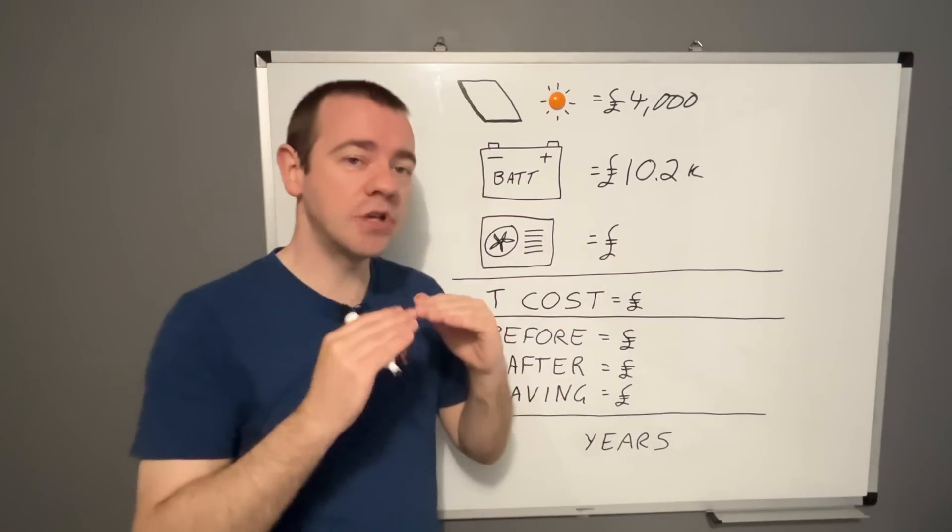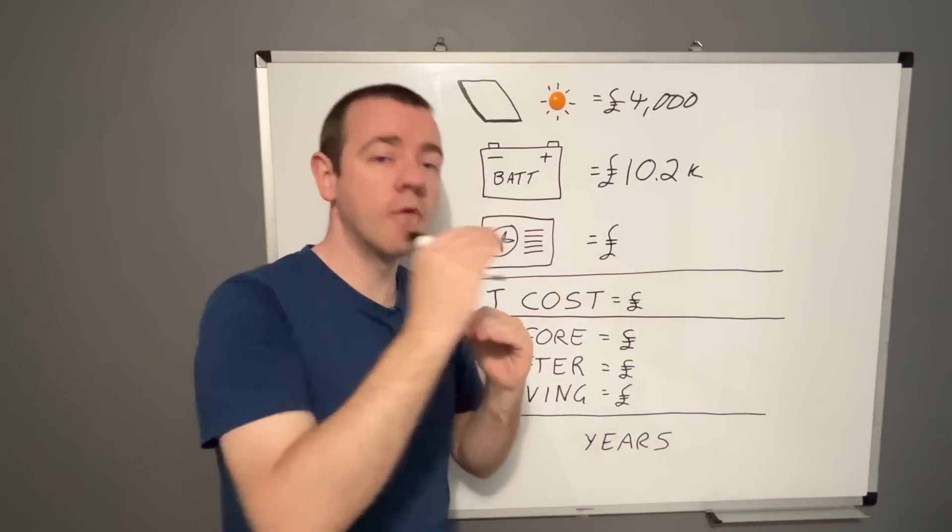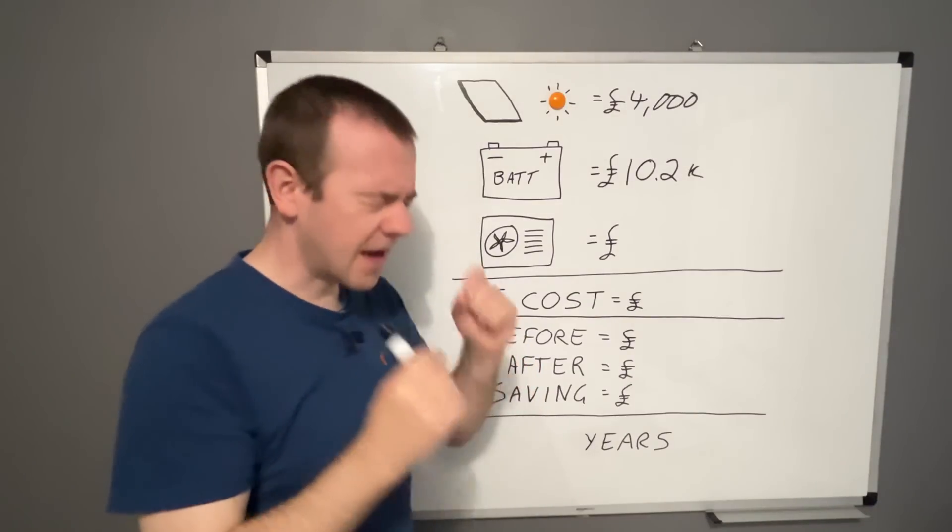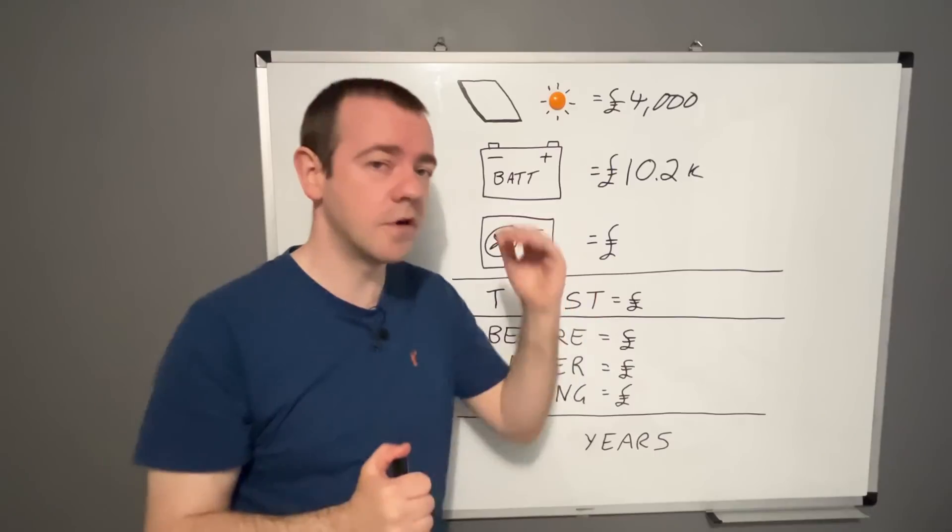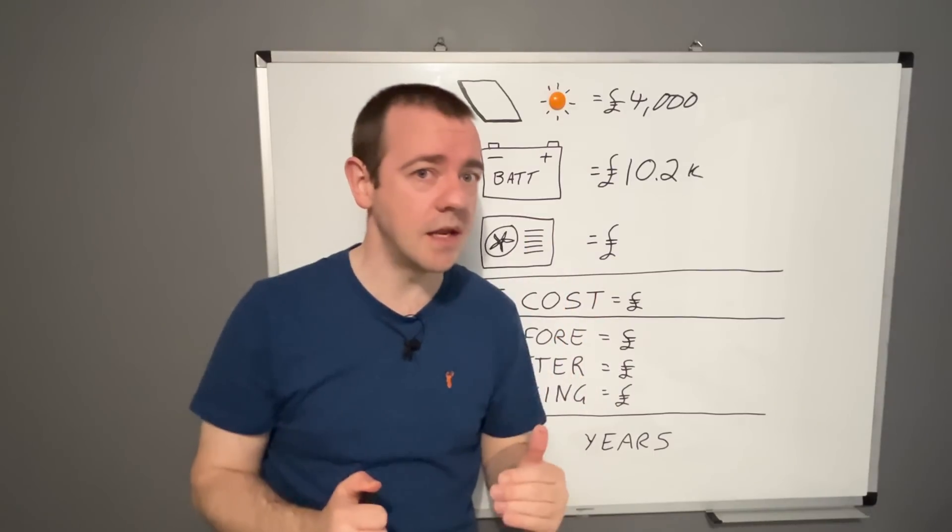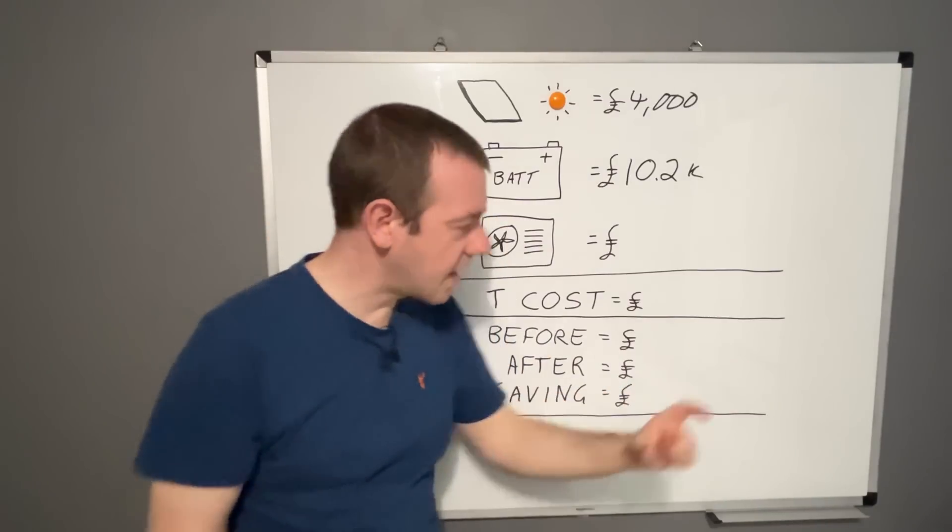Now I can't remember the exact amount, but let's say it was something like two and a half thousand pounds for a new gas boiler. We needed a new heating system. Well, that's going to cost us two and a half.